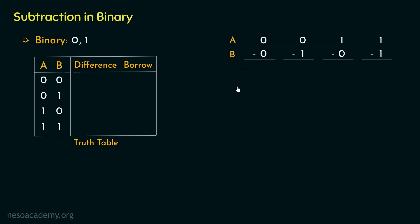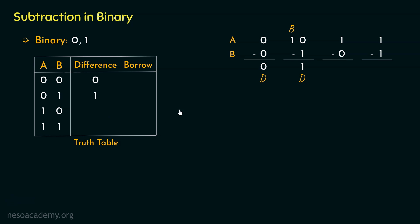Let's proceed with the subtraction cases. When the minuend A is 0 and the subtrahend B is 0, the difference is 0. For the next case, A is 0 and B is 1 — the minuend is less than the subtrahend, so we borrow. The maximum borrow in binary is 1, just like the maximum carry in binary addition. In binary, 1,0 is 2 in decimal, so from 2 minus 1 we get a difference of 1. The borrow is 1.